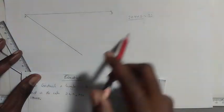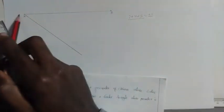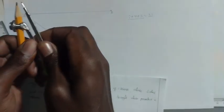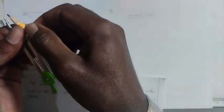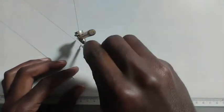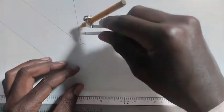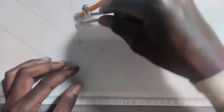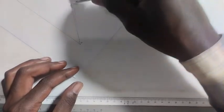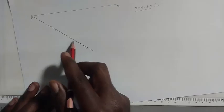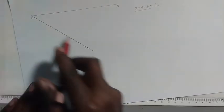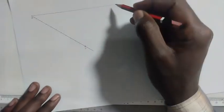Divide this auxiliary line into 11 equal parts. In order to get equal parts, use a compass adjusted to any convenient length and step off the divisions: one, two, three, four, five, six, seven, eight, nine, ten, eleven. These are our 11 equal parts. Now we are going to connect point C to point B.